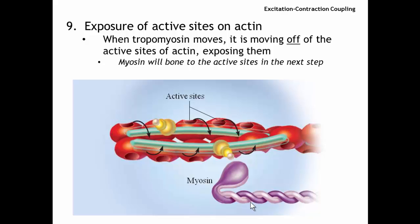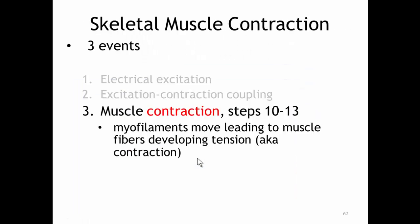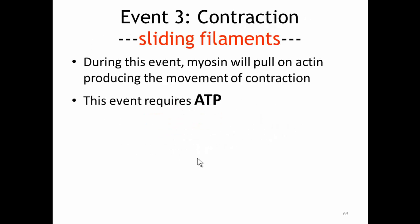Step nine is the exposure of the active sites on actin. The top picture shows what the thin filament looks like with no calcium present, and the bottom picture shows what it looks like in the presence of calcium — it looks very different, caused only by the release of calcium. You need these active sites exposed on actin because what happens next is myosin is going to grab onto them. The third and last event of muscle contraction is the actual contraction event, steps 10 through 13. Our myofilaments are going to move, leading to contraction. This requires ATP.